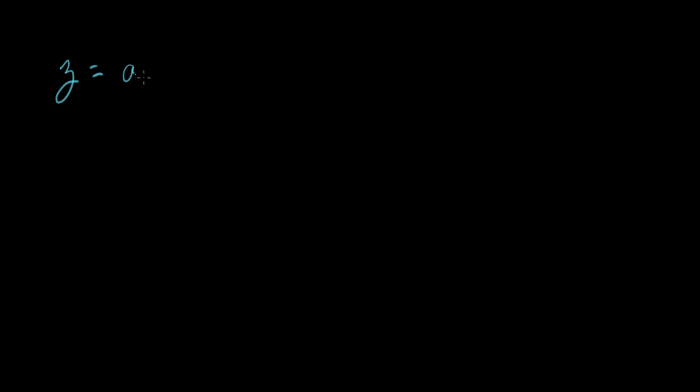So now we've seen rotation by multiplying J by J over and over again, and we see that that's rotation. Now let's do it for the general idea of any complex number. So if I have a complex number, we'll call it Z, and we'll say it's made of two parts: a real part called A, and an imaginary part called B.